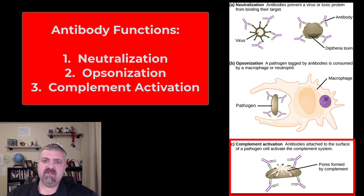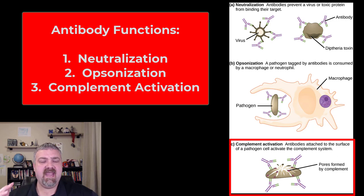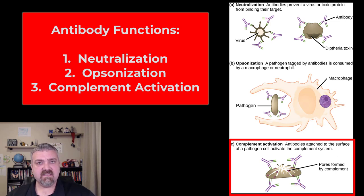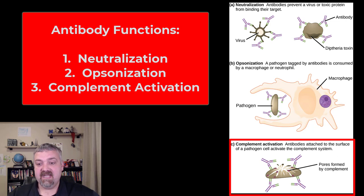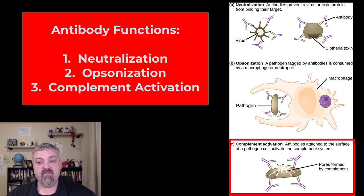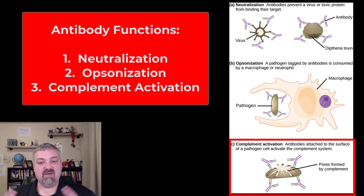Next we have complement activation. Antibodies activate part of your complement system, which is also involved in opsonization and calling in more immune cells, but specifically it forms what are called membrane attack complexes. As you see, they're forming pores in the cell, which are going to cause it to not be able to control osmosis and lyse and rupture.